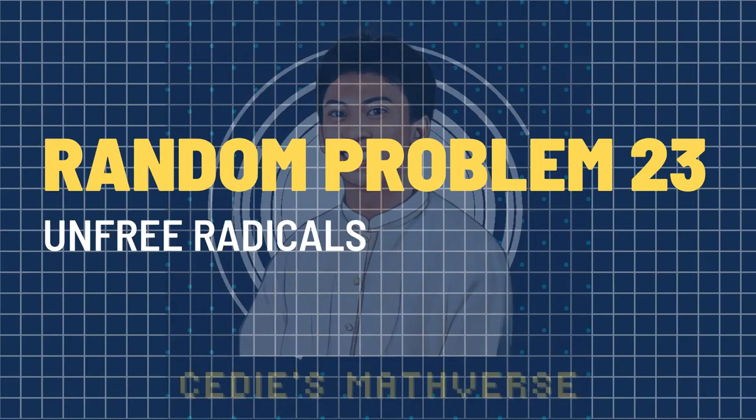Hello everyone, this is Sedi and welcome to Sedi's Matverse. For today's video, we will discuss a Hong Kong IMO hate-round problem, which is our Random Problem 23. It is entitled Unfree Radicals. What makes these radicals bounded up? Let's find out and without further ado, let's get started.